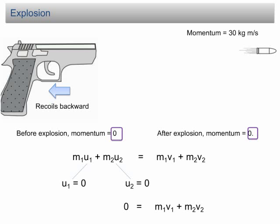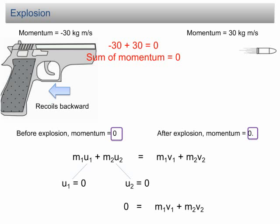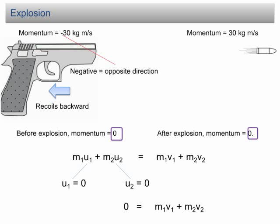If the momentum of the bullet is 30 kgm per second, then the momentum of the gun must be negative 30 kgm per second, so that the sum of momentum still zero after the explosion. The sum of momentum after the reaction must always equal to the sum of momentum before the reaction. The negative sign suggests that the gun moves in the opposite direction of the bullet.